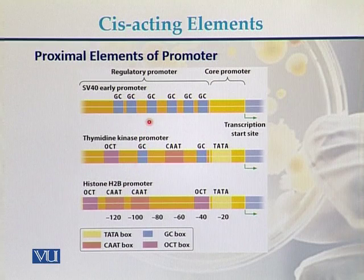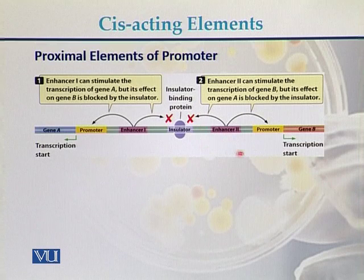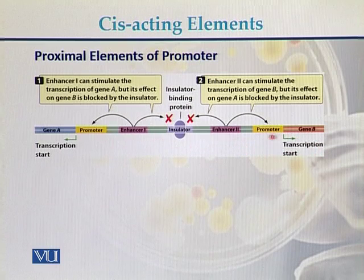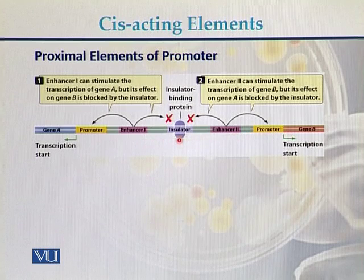Cis-acting elements are the sequences to which trans-acting elements bind. In this diagram, there are two genes — gene A and gene B. Along with each gene, there is a promoter and enhancer sequences. Between these two genes, there are insulators.